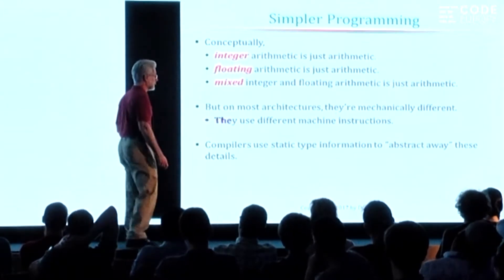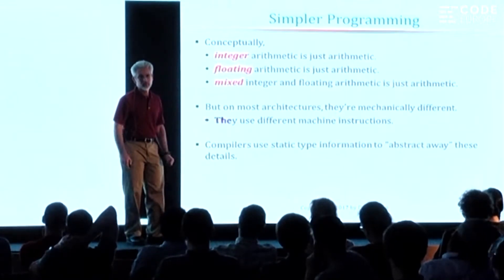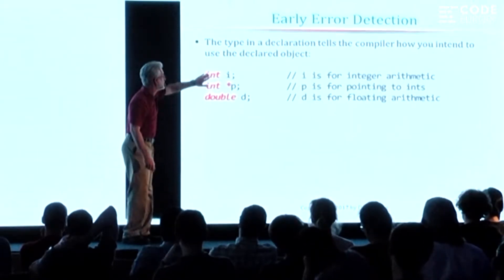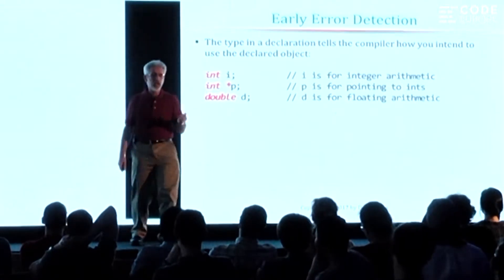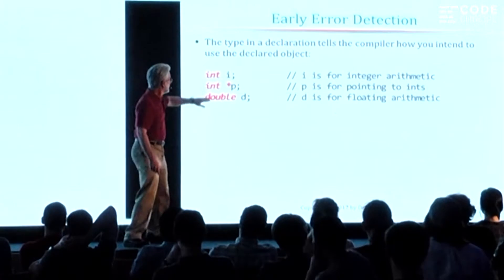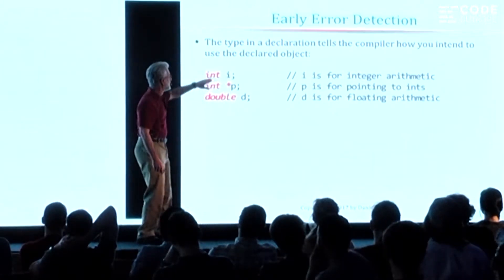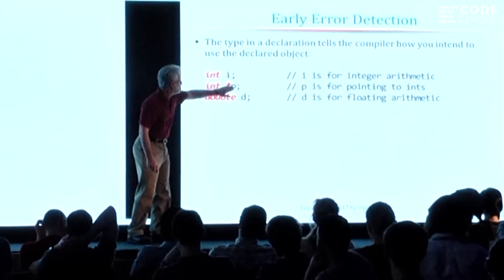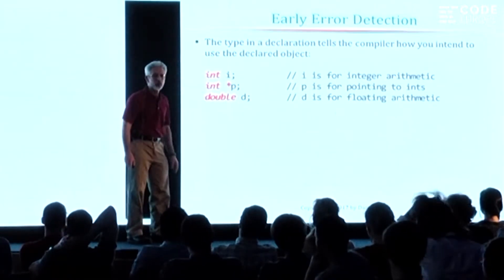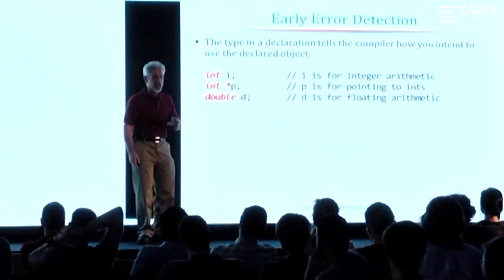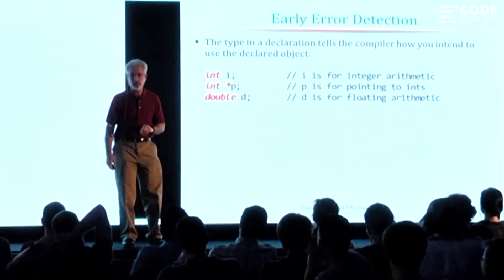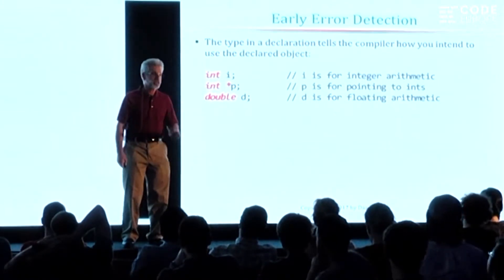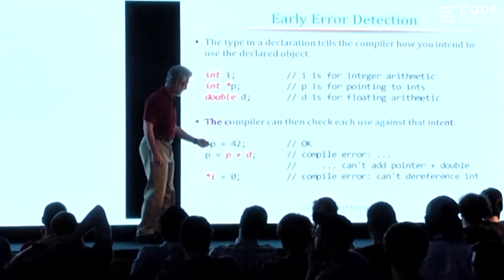Conceptually it's all just arithmetic, but when you look at the machine instructions actually generated, integer arithmetic almost always generates different sequences of machine instructions. But the compiler uses type information to abstract that away, and that's valuable — it makes your life easier as a programmer. Also, each time you write a declaration you include type information, and one interpretation of that is how do you intend to use this. When you write a declaration like i as an int, what you're saying is: I intend to use that only for doing integer arithmetic.